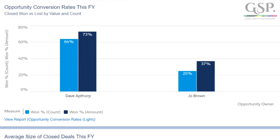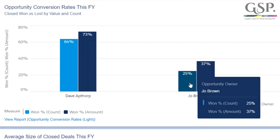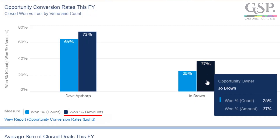Well, you want to do it in two ways. The first is by count — in other words, the conversion rate by the number of opportunities. That's in the lighter blue here. And the second way is to measure the opportunity conversion rate by value. That's in the darker blue on this chart. Here's how those two related measures work.